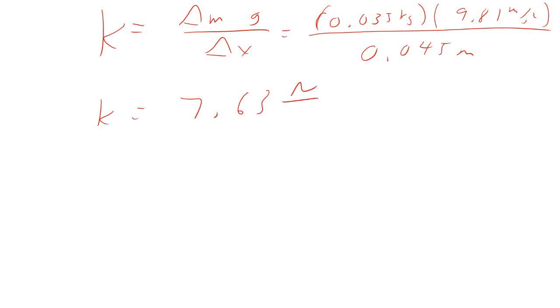So K is going to be equal to the delta M times G divided by delta x. And so that would be the 0.035 kilograms times 9.81 meter per second squared divided by 0.045 meters. And so K is going to be 7.63 newtons per meter. Okay. So now we got it. So even though we didn't know all the terms, we knew the differences between the terms. And that got us what we needed to know.